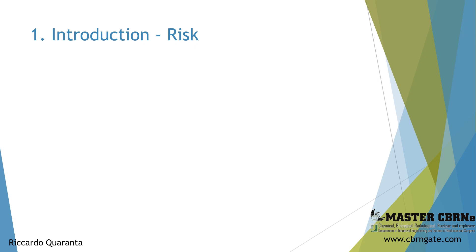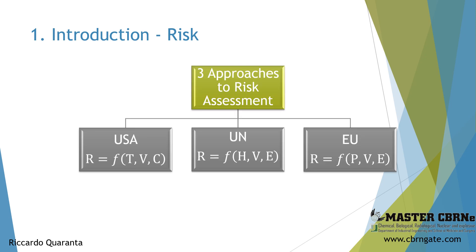Many definitions of risk are available in the technical literature. Generally, risk is seen as a hazard or an exposure to a possibility of loss or damage, or the ability to suffer a possible loss. Risk is considered as a combination of the consequences of an event and the associated likelihood probability of its occurrence. Here we will see three approaches to risk assessment: the American approach where risk is a function of threat probability, vulnerability and consequence; the UN approach where risk is a function of hazard, vulnerability and exposure; and the EU approach where risk is a function of probability of occurrence, vulnerability and exposure.